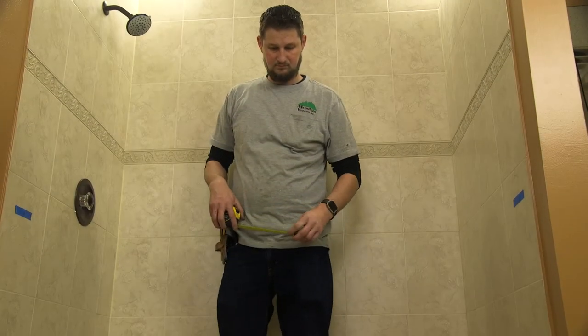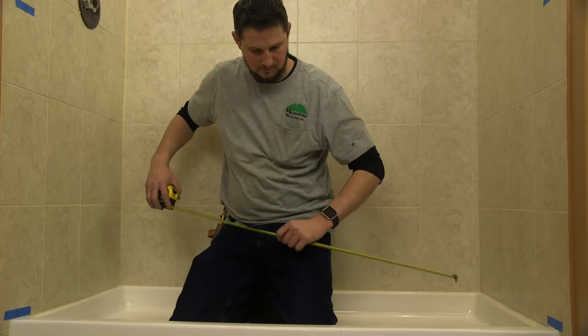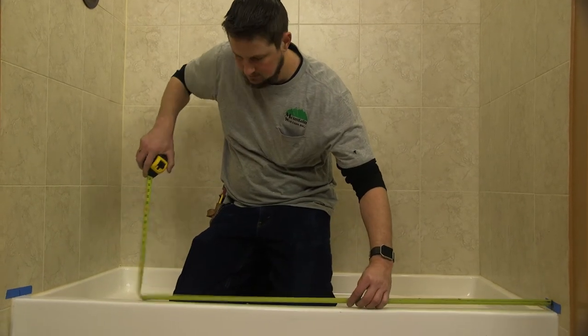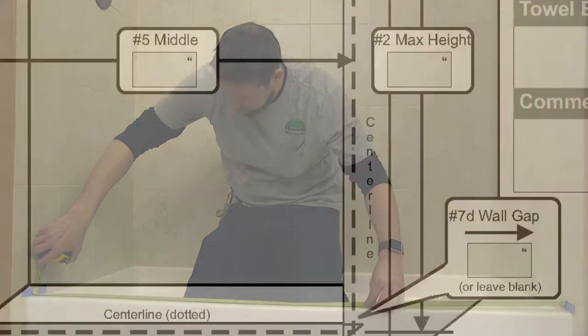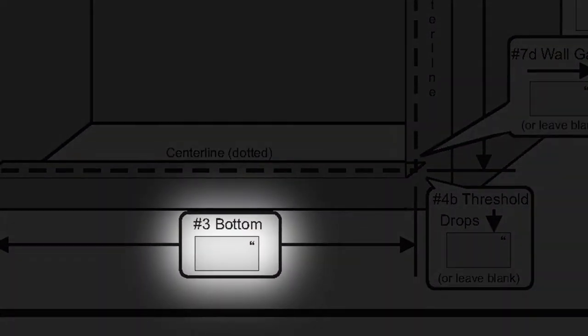Find the bottom center line marks at the threshold or tub base and measure from wall to wall. Record this in box number three on the Holcomb measuring sheet.